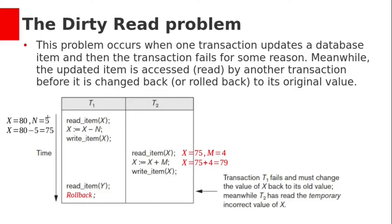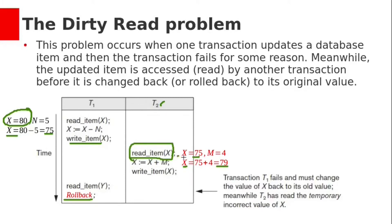Assume X equals 80. We want to transfer 5 reservations from flight F1, so the updated X value is 75, which is written onto the disk. T2 reads this X value of 75 and reserves 4 more seats, making X equal to 79. But T1 fails for some reason and rolls back to its original state, making X equal to 80. So T2's read of X as 75 was invalid because it read uncommitted data. Any such read is called a dirty read.